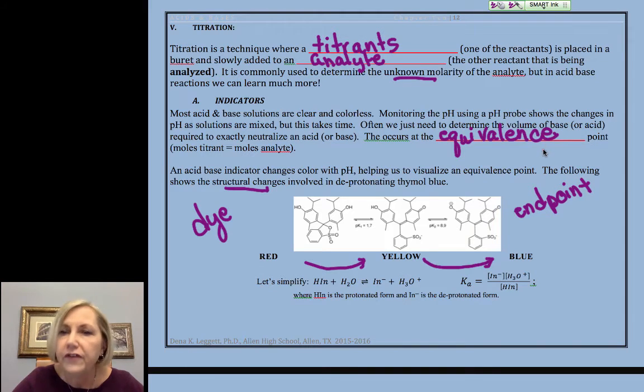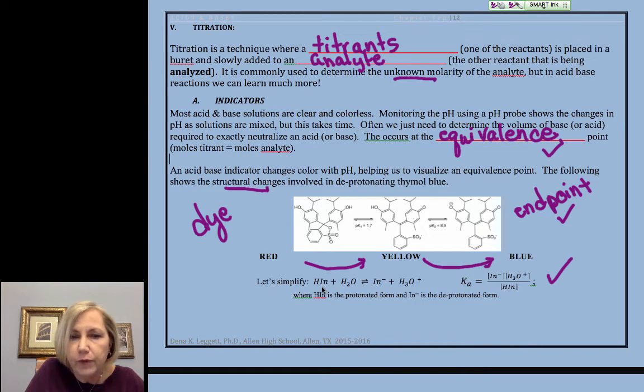So, the equivalence point is the chemical equivalency. The end point is when the indicator changes color. Now, that's a pretty complicated structure, so I set up just a generalized equation for a protonated indicator going to a deprotonated indicator as we would at a base or throughout an equilibrium. This shows it just reacting with water.